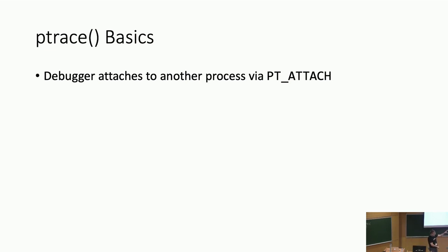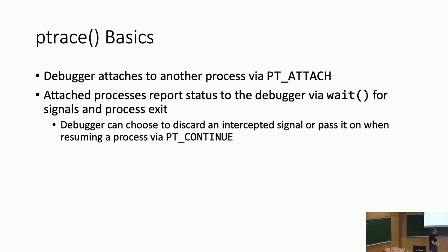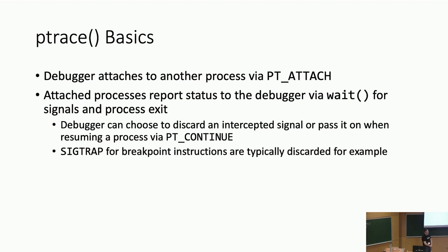In general, you have some kind of debugger process that wants to control or inspect another process. From the debugger's perspective, you use PT_ATTACH with ptrace to attach to some other process. And then any time something interesting happens, the attached process is going to stop, and the debugger uses wait to find out what happened. The only time a stop happens is either for a signal of some sort or for exit. The debugger then has a choice: it can either pass along a signal it receives, or it can decide to discard it. When it continues, the child will PT_CONTINUE.